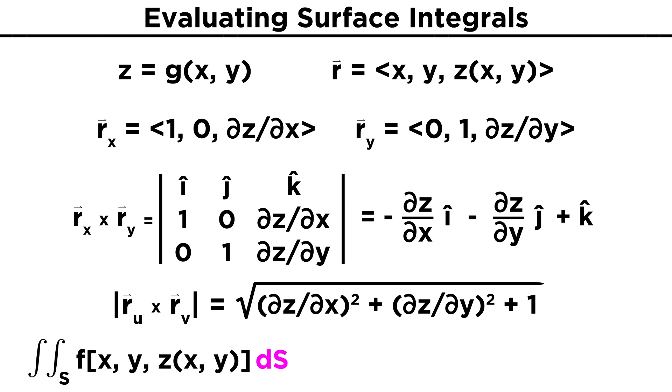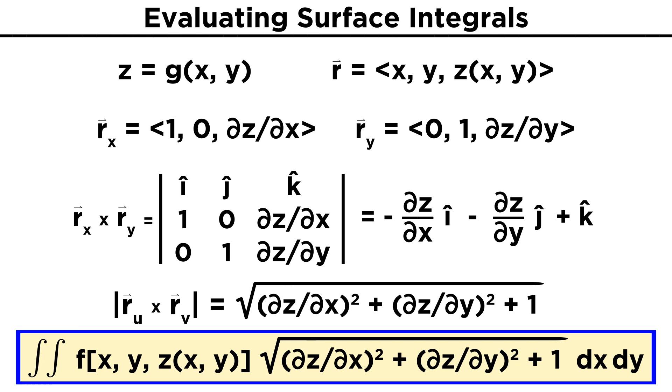Now that we have this, we see that dS in this special case is root dZ dX squared plus dZ dY squared plus one dx dY. Putting everything together, our surface integral becomes the double integral of the function F times root dZ dX squared plus dZ dY squared plus one dx dY. Calculations for this scenario are much more simple and follow this easy to calculate expression. We only need to take care when dealing with complex bounds for X and Y.